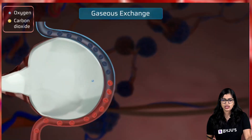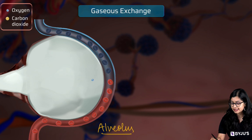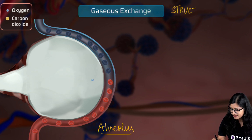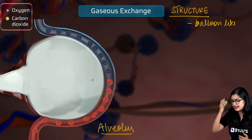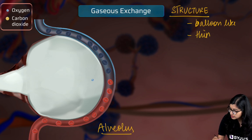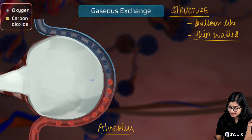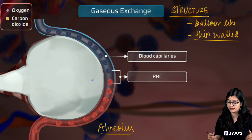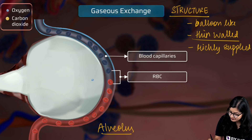Let's look at a single alveolus. Structurally, it looks like an air sac — it has a balloon-like structure. It is thin-walled, made up of just a single layer of cells, and it is richly supplied with blood vessels. This is very important because the blood vessels bring in blood and transport it to different parts of the body.